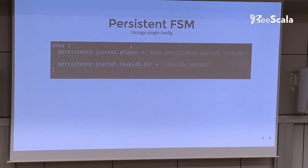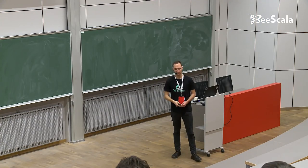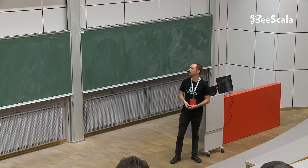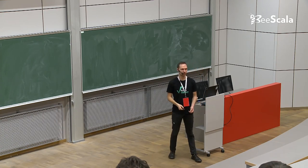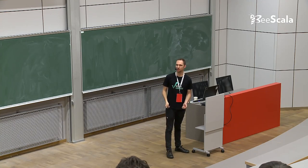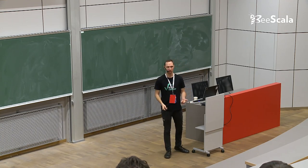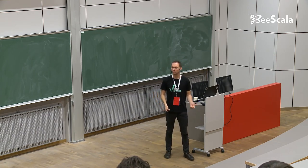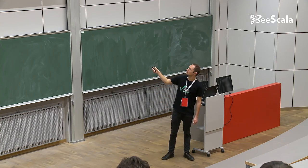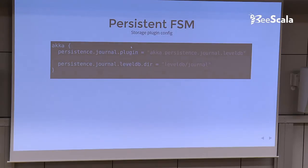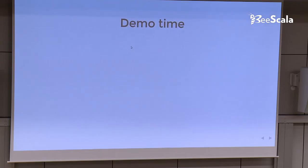To use the journal, we need to define a plugin for it. There are plugins for different databases like Cassandra, MongoDB, or in-memory journal. Here I'm using LevelDB, which is a very simple database working on the file system. The only thing I need to provide is the directory in which I'm keeping the data.